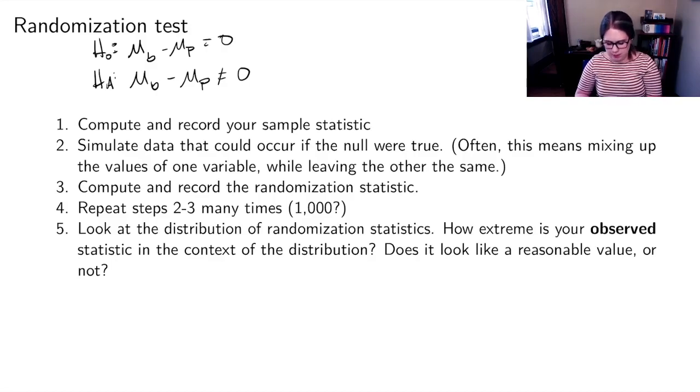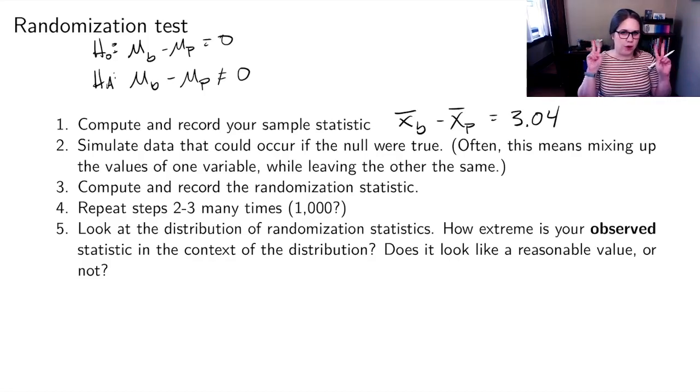The way that the test itself works is step one, you're going to compute and record your sample statistic. So in this case, x bar b minus x bar p that we really observed, I think that was 3.04 days. Then we're going to simulate some data that could occur if the null were true. In this case, that means mixing up the values of one variable, reassigning those packages to be with the tape or without the tape. Then we're going to compute and record the randomization statistic. We're going to find the mean of our new pretend groups, and we're going to subtract them and write that down.